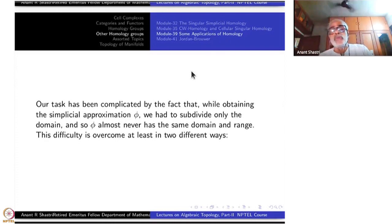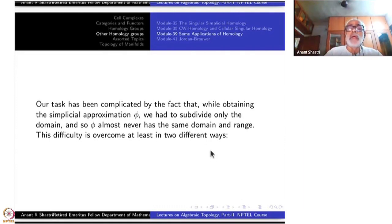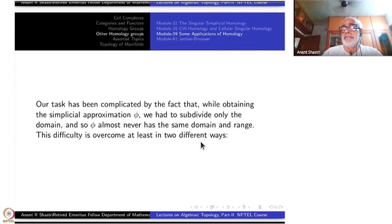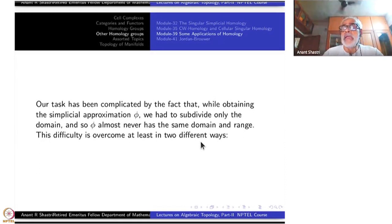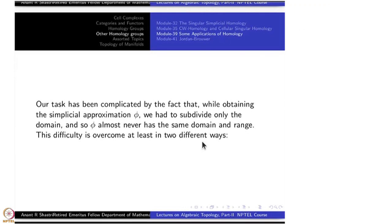The difficulty is that when you subdivide, the chain complexes are different. The simplicial chain complex of the subdivision and the simplicial chain complex of the original are different modules, so when you have a map between different chain complexes, the trace is not defined. The trace is defined only for an endomorphism of the same module to itself. This has to be overcome, and there are different methods.